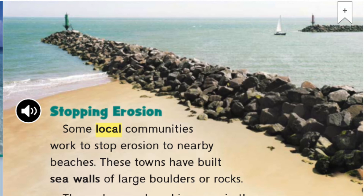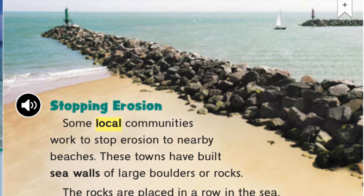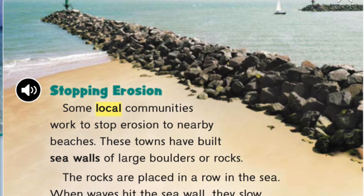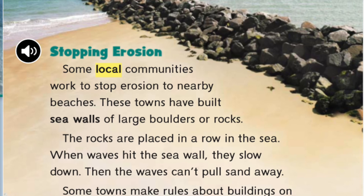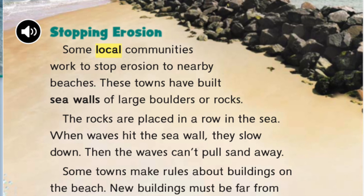Some local communities work to stop erosion to nearby beaches. These towns have built seawalls of large boulders or rocks. The rocks are placed in a row in the sea. When waves hit the seawall, they slow down. Then the waves can't pull sand away.